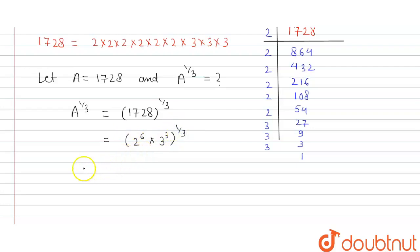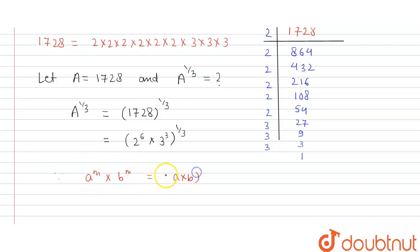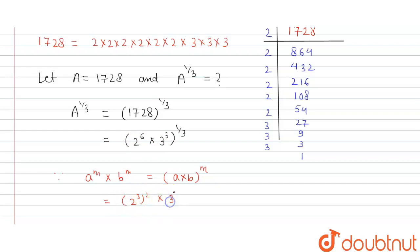So we use a formula which is: a^m × b^m equals (a × b)^m. So we can write 2 raised to power 6 as (2 raised to power 3) whole raised to power 2, multiplied by 3 raised to power 3, whole raised to power 1/3.